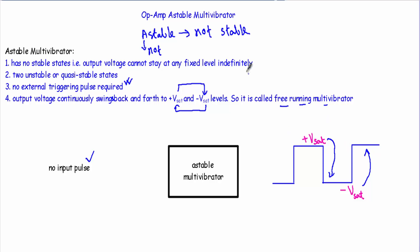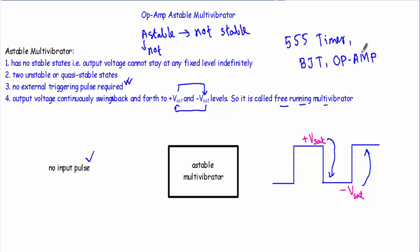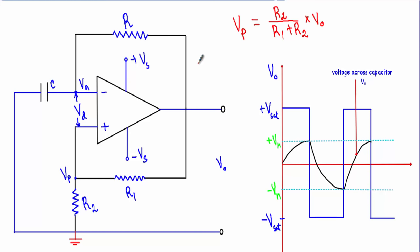This is how the astable multivibrator generates a square waveform. We can implement an astable multivibrator circuit using a 555 timer IC, a BJT network, or an operational amplifier. Here I will show you the operation of an operational amplifier astable multivibrator circuit, where the op-amp is forced to operate in the saturation region so the output swings repeatedly between plus Vsat and minus Vsat.